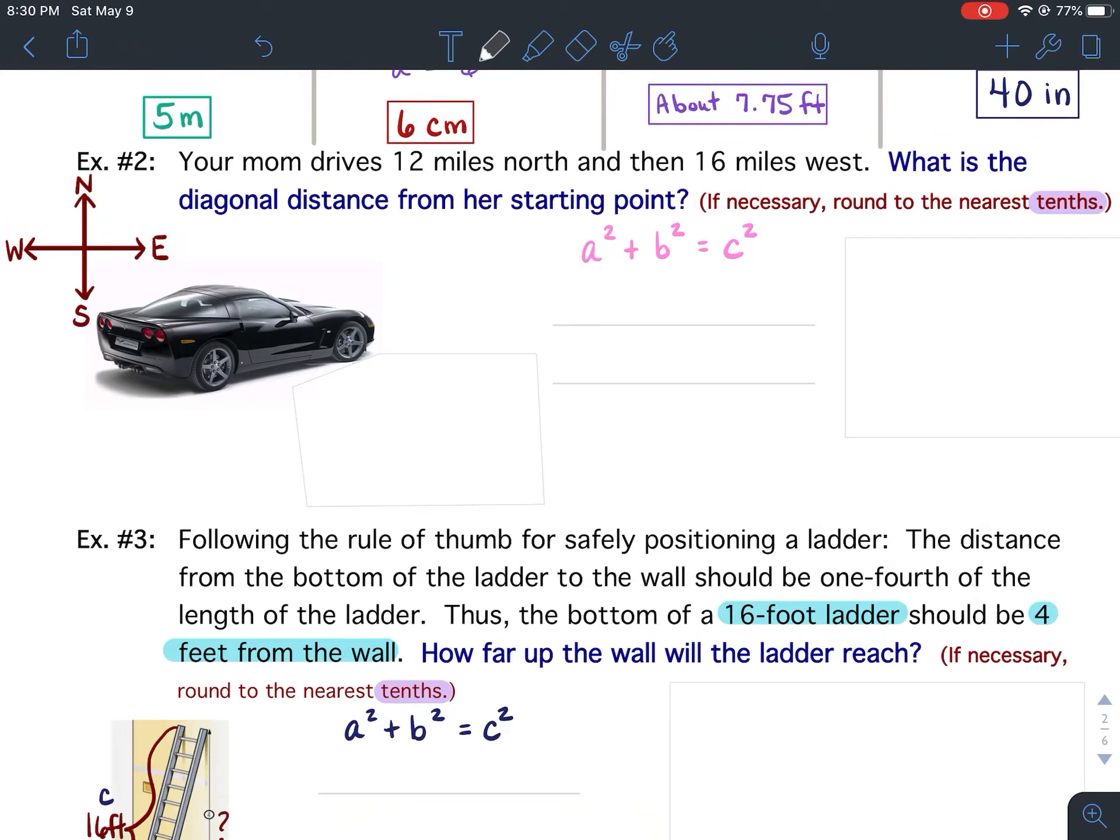Pythagorean Theorem Lesson 24 notes, example number two. Your mom drives 12 miles north and then 16 miles west. What is the diagonal distance from her starting point? If necessary, round to the nearest tenths.